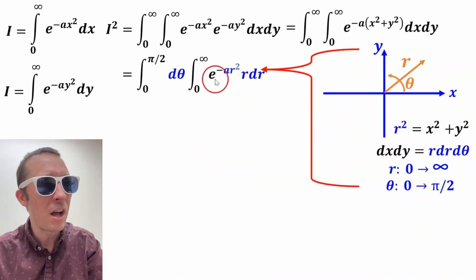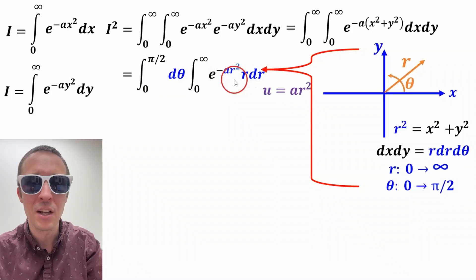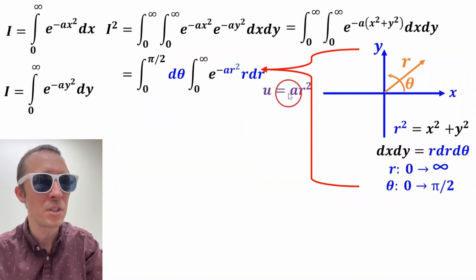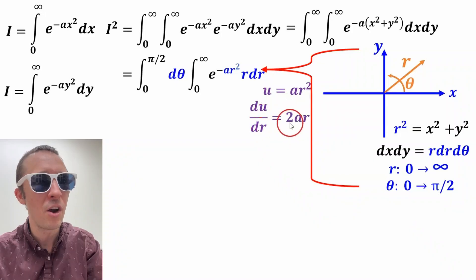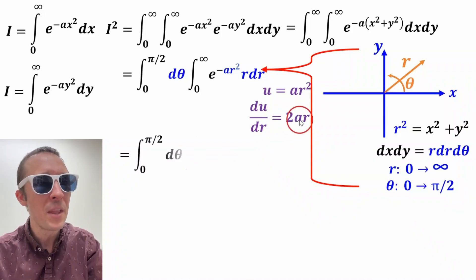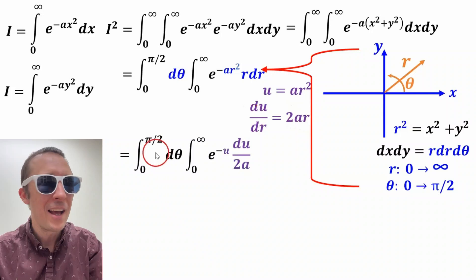So the integral of this right-hand side is going to be done using a u substitution. We'll say u equal to a r squared. And then if we take the derivative, du over dr equals 2 a r. And if we substitute that in, this is what we got.